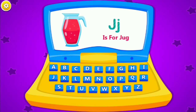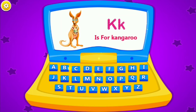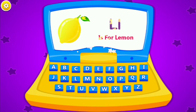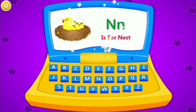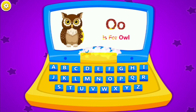...jug. K is for kangaroo. L is for lemon. M is for monkey. N is for nest. O is for...